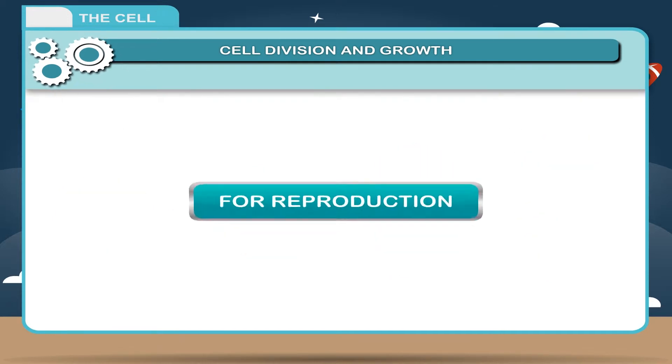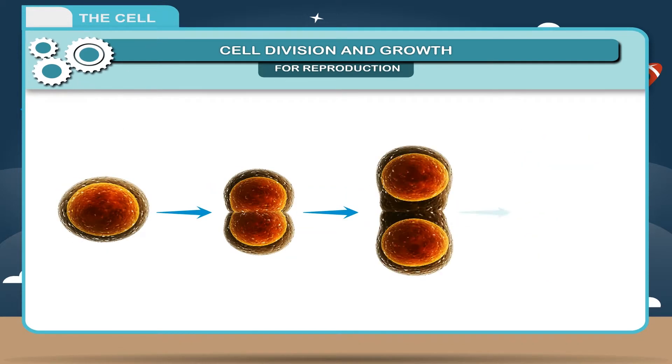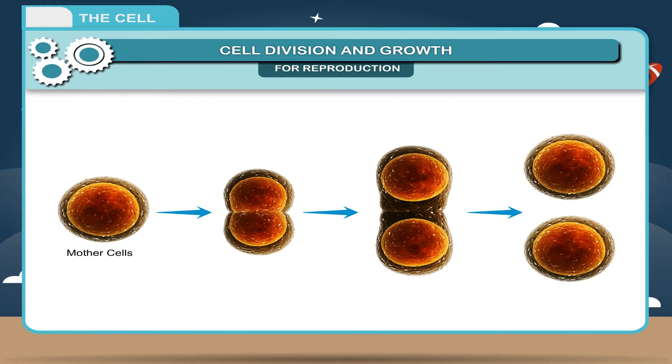For reproduction, in unicellular organisms, cells divide by binary fission to form new daughter cells. The daughter cells grow to their full size and then divide again.